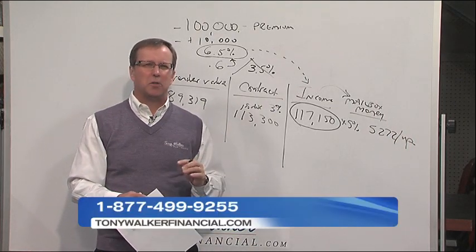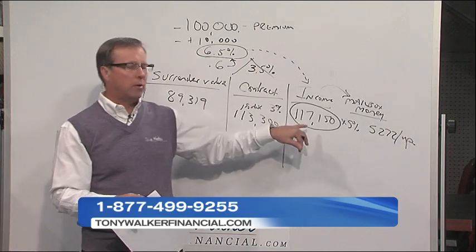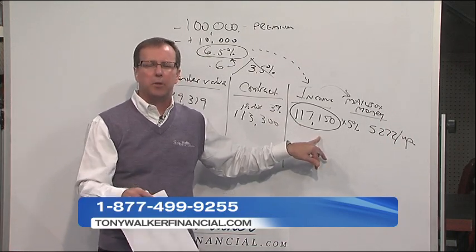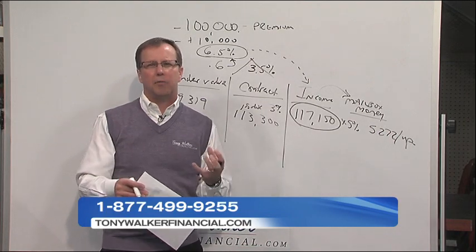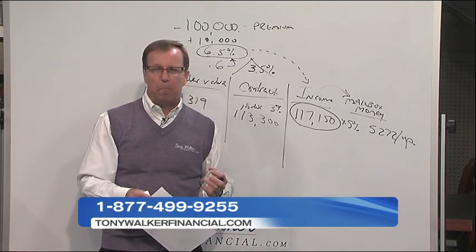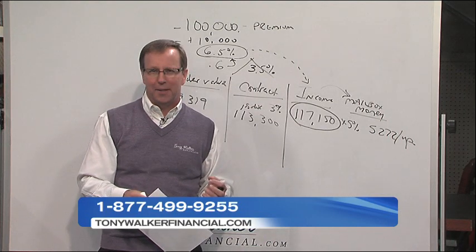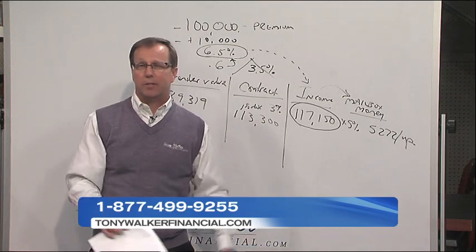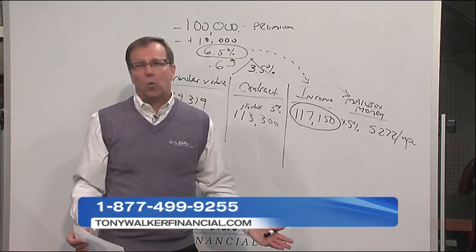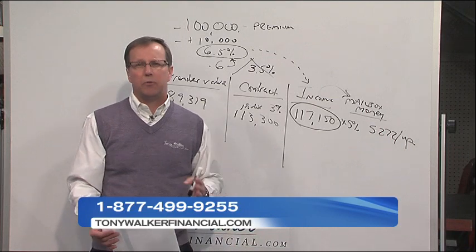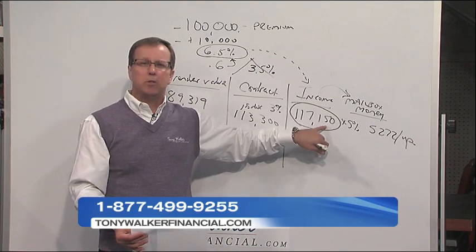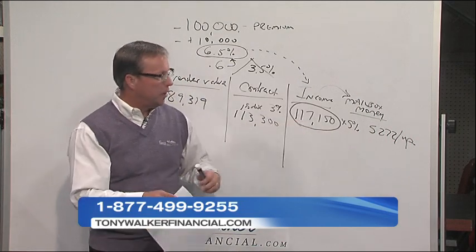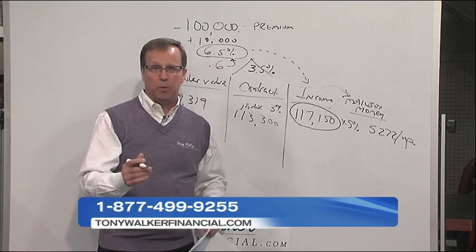We're going to come back in the next segment here and share with you how these three columns work. But the income rider is a real number. But for those of you who are in the accounting profession, just think of it as an accounting feature of the product. It is not a number that can ever be liquidated. So I see people coming to me and they've met with advisors and they say, hey, I've been told I can get six and a half percent. It's guaranteed. I can walk away with the money at some point down the road. That is not true. You can't walk away with any of this amount. This amount is used to calculate mailbox money. So if the person comes in after the first year and gets mailbox money, it's $5,200.